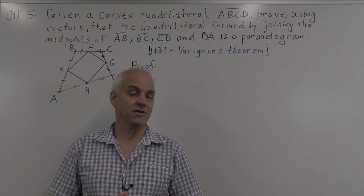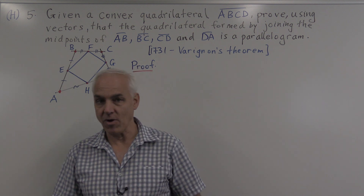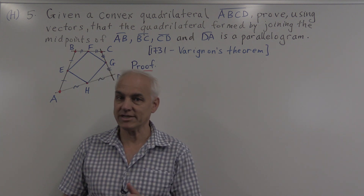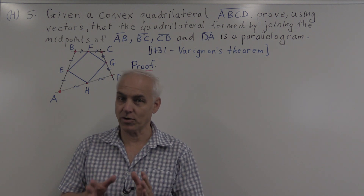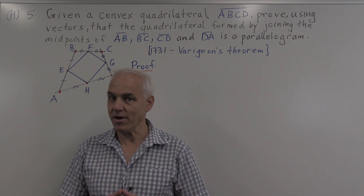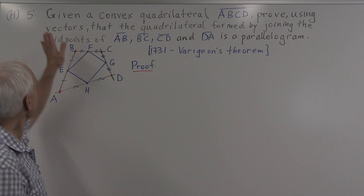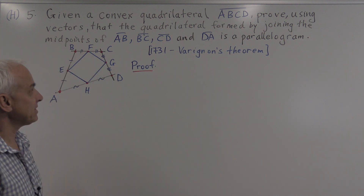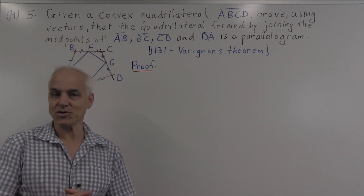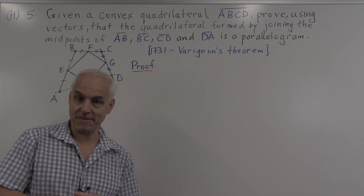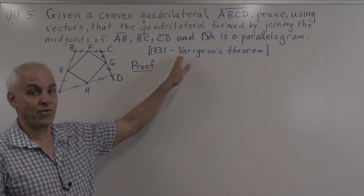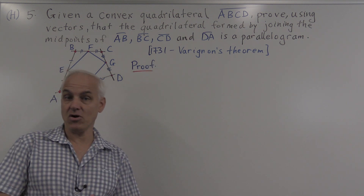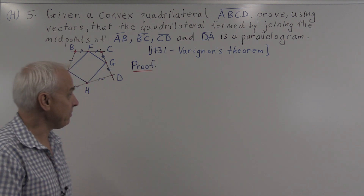Hello everyone, we're at the University of New South Wales and I'm Norman Weilberger. This is our second problem in this linear algebra series of online tutorial solutions to Math 1131 problems. We're looking at question 5 in chapter 1, which is one of the harder problems — more theoretical and perhaps a little bit more interesting. It's actually a classical theorem called Varignon's theorem, going back to Pierre Varignon in 1731.